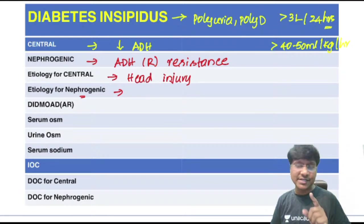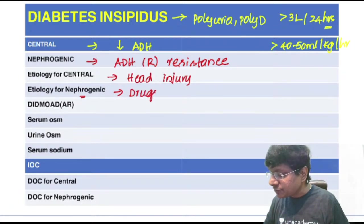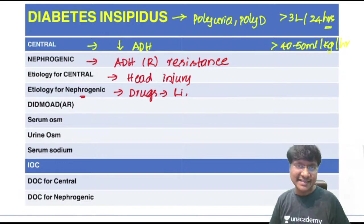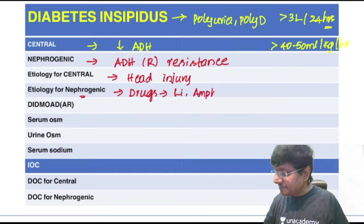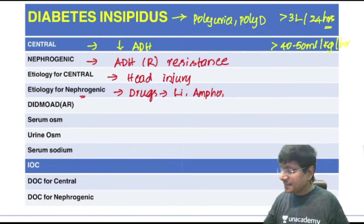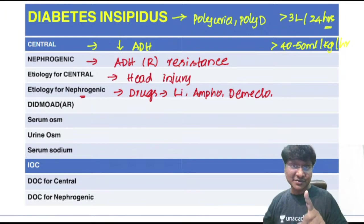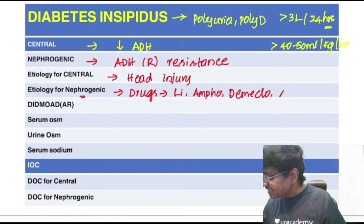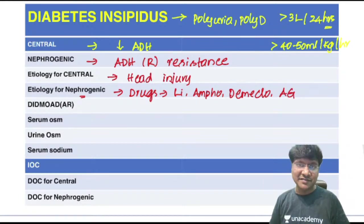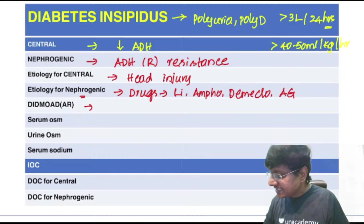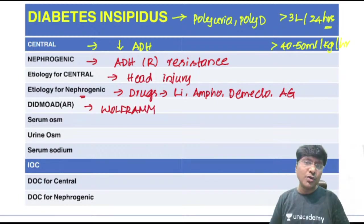For nephrogenic diabetes insipidus, important drugs that cause it include lithium, amphotericin B, demeclocycline, and aminoglycosides active against gram-negative infections. DIDMOAD syndrome, also called Wolfram syndrome, is responsible for nephrogenic diabetes insipidus.